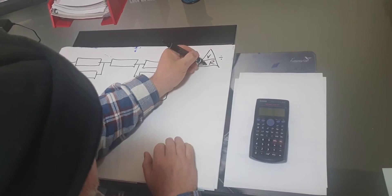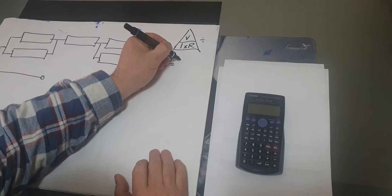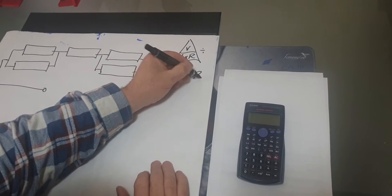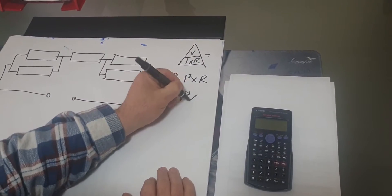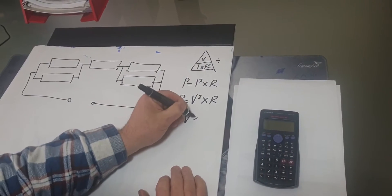This is your divide and this is your times. The other two power circuits were P equals I squared times R, P equals V squared times R, and P equals V times I.